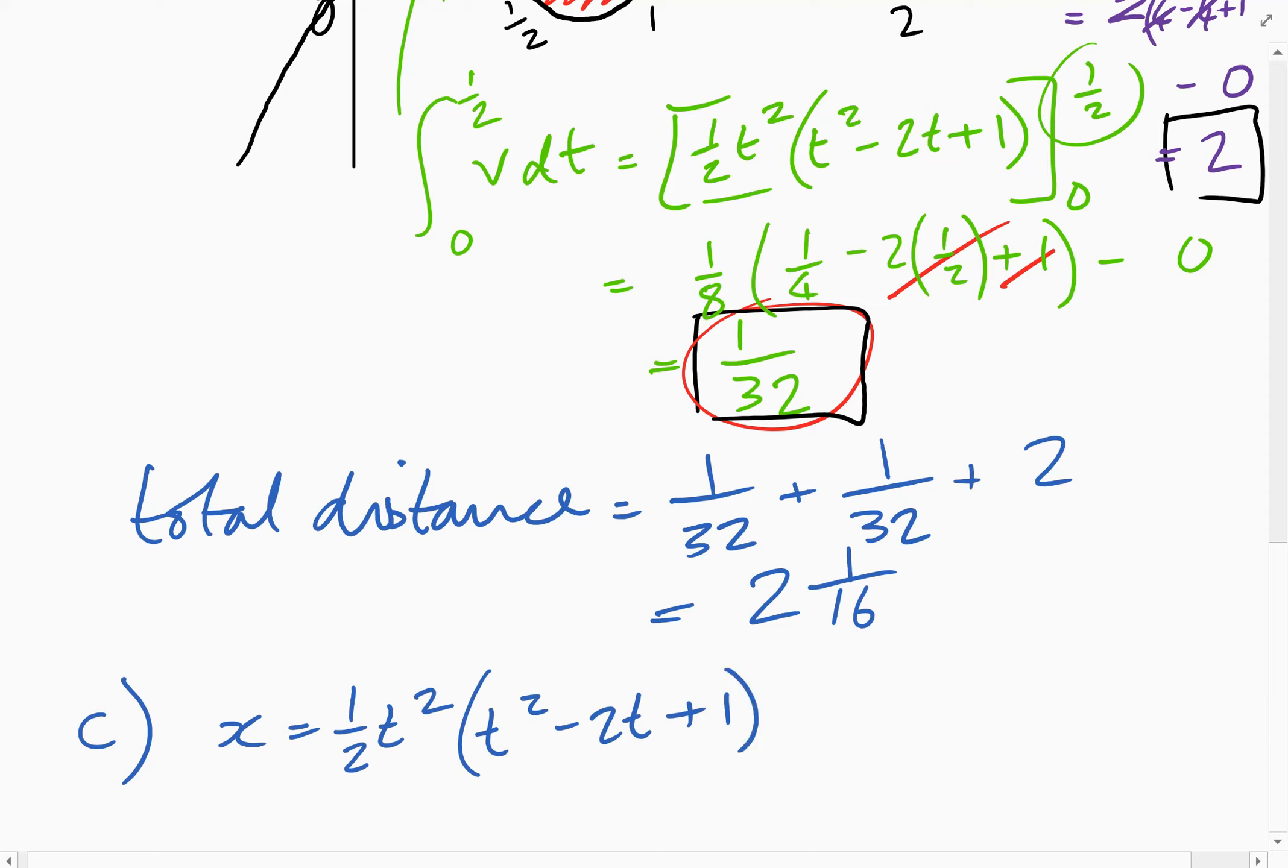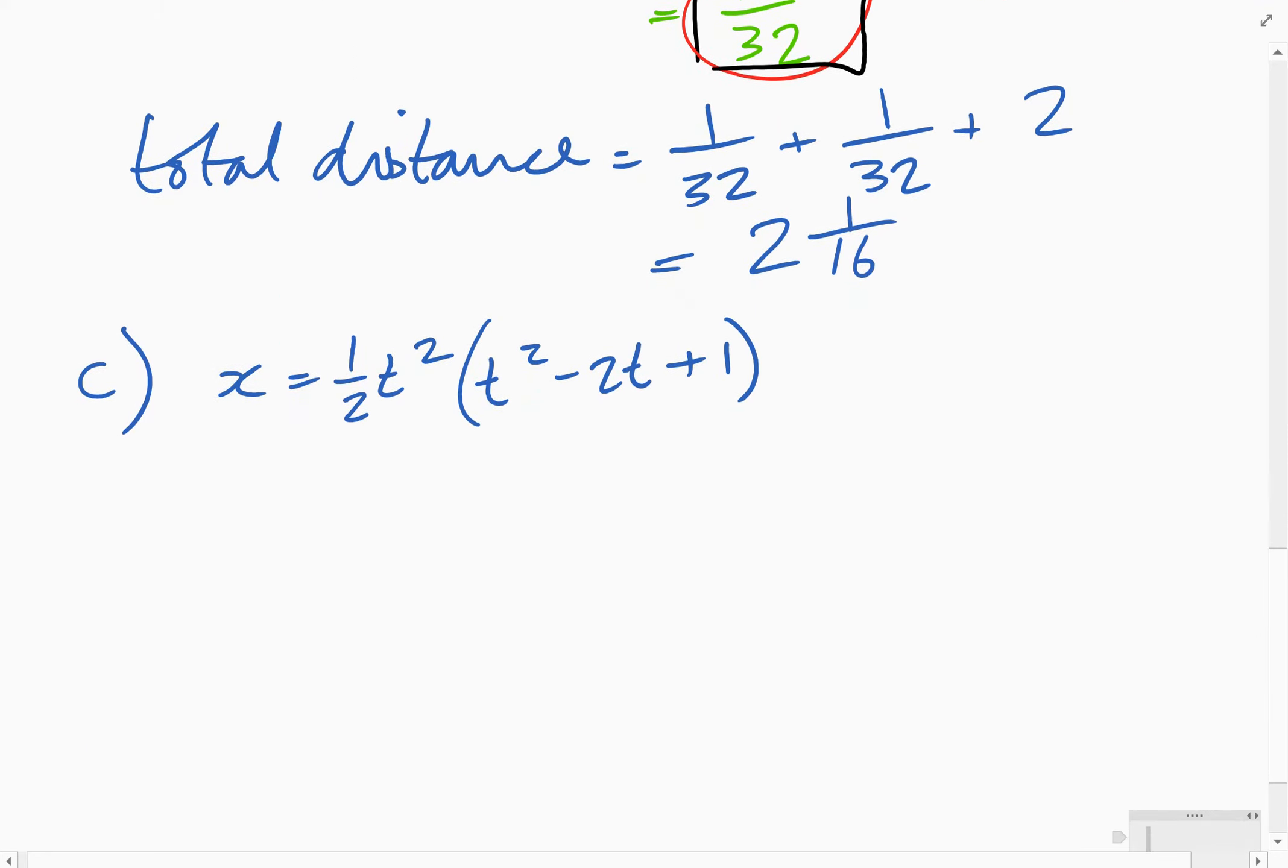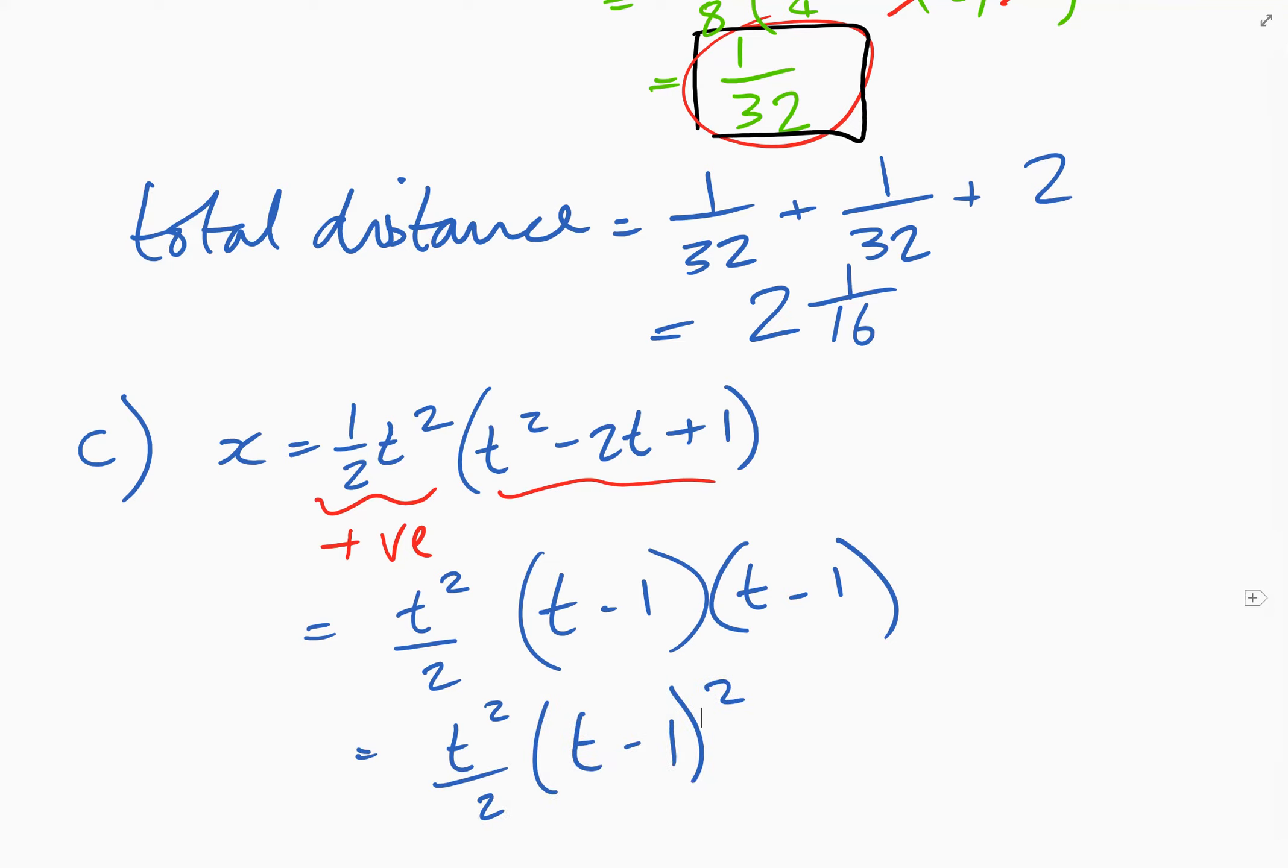Well, I think the easiest way to do that is you can already, you can clearly see that this bit here has to be positive. That's clearly positive there. So if we can show that this is always positive, then that's all we've got to do really. So in order to show that that bit in the bracket is always positive, the quickest way is to factorize. So the front bit is T squared over 2. And then when we factorize this bracket here, we'll get T minus 1, T minus 1. So we've got T squared over 2, T minus 1 squared.